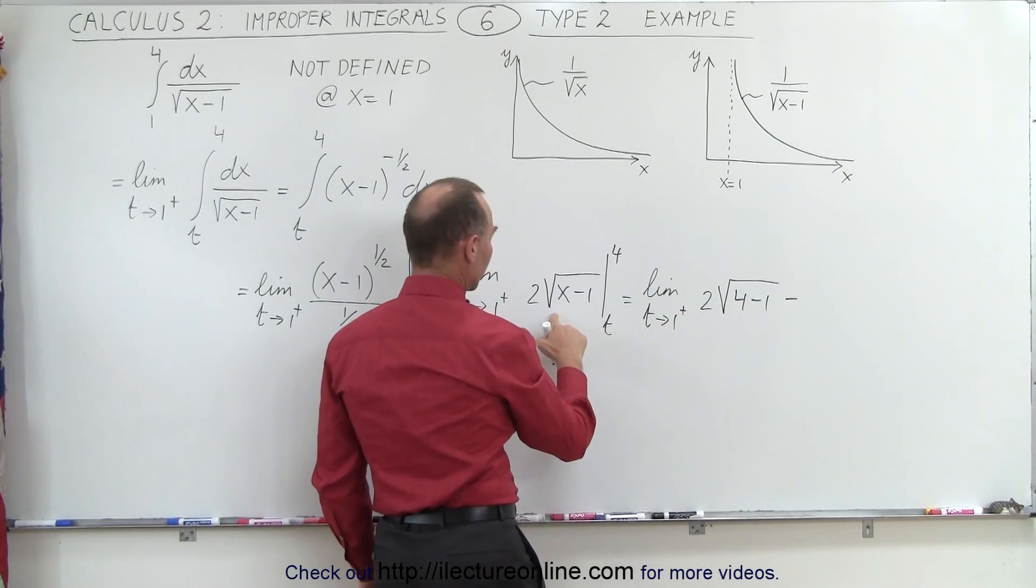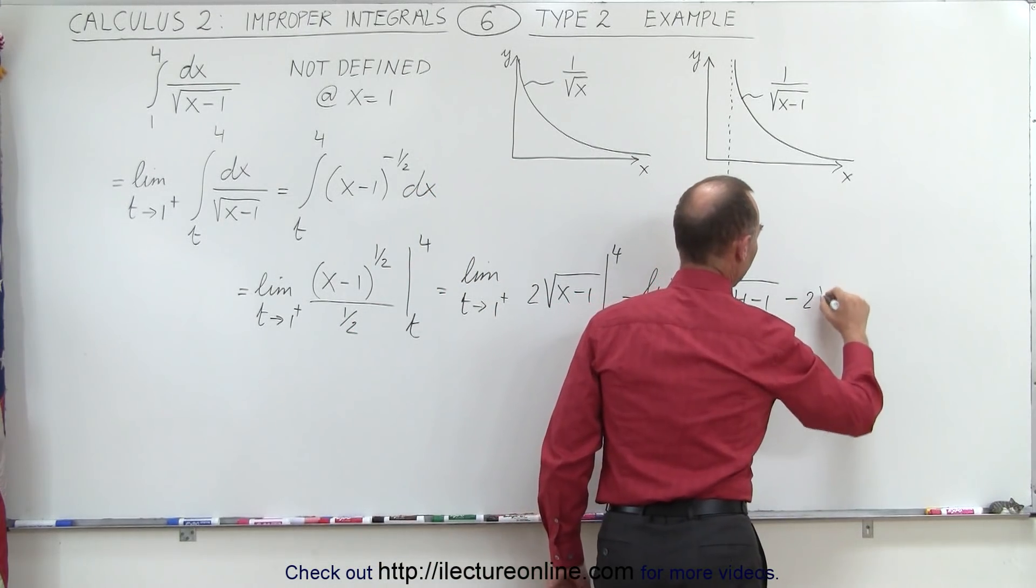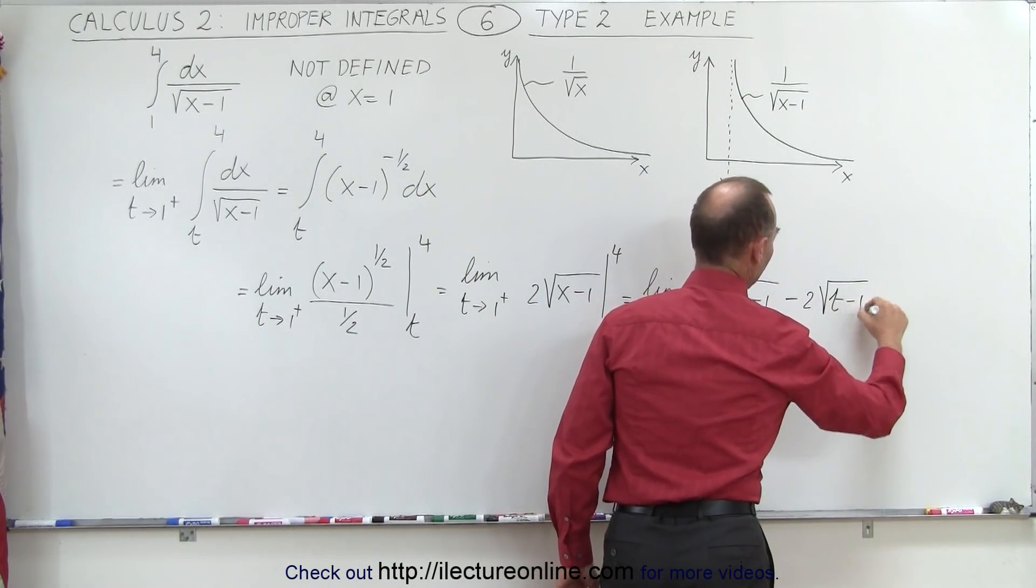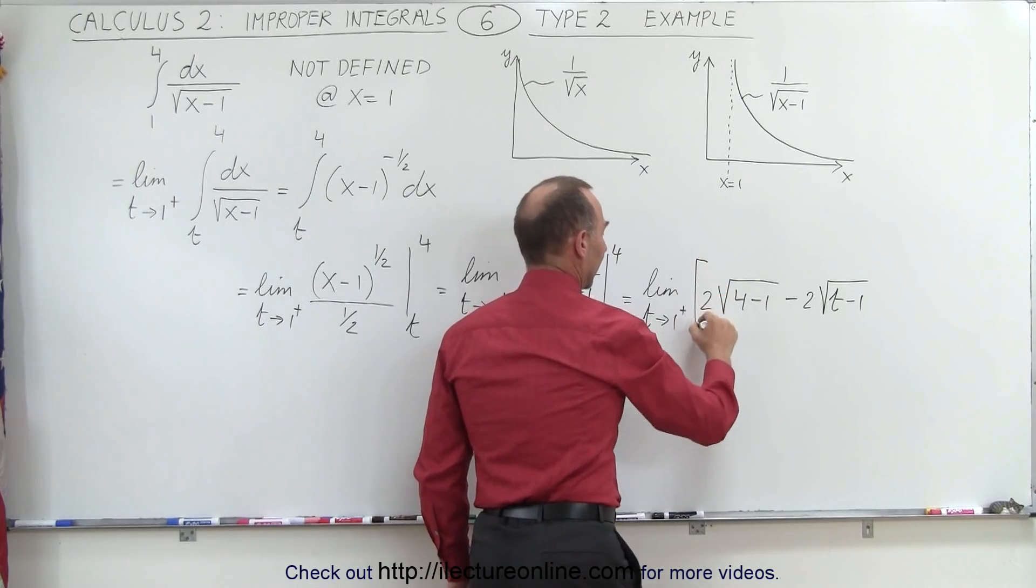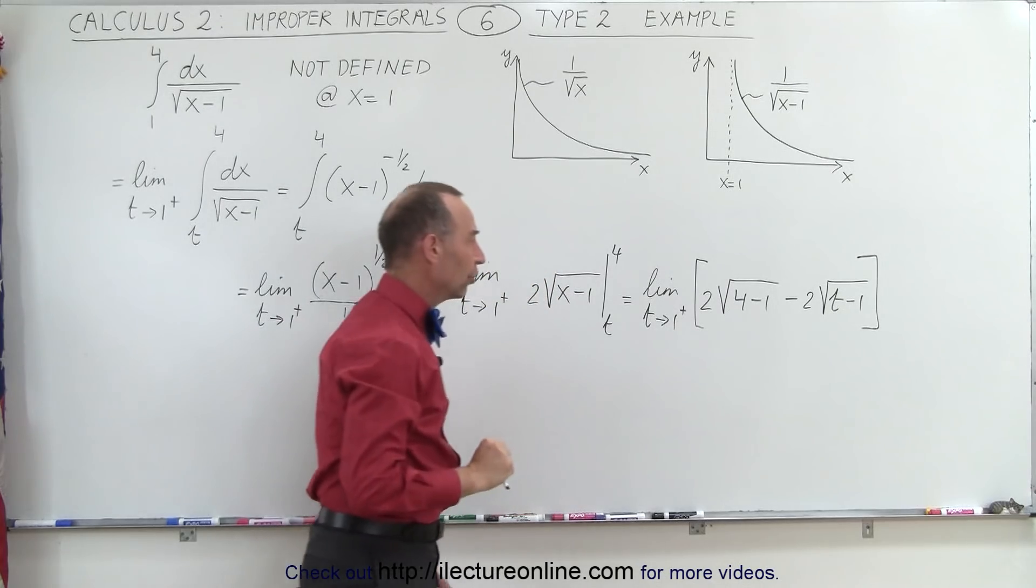minus, when we plug in the lower limit, we'll get 2 times the square root of t minus 1. And we'll put brackets around that, so we can see that this limit is actually good for both of these terms.